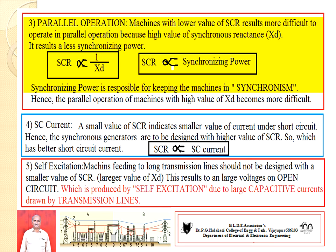Number four: Short Circuit Current. Short circuit current is directly proportional to SCR. If the machine is characterized by a low value of SCR, then the current produced under short circuit conditions is also low. The SCR value should be selected appropriately depending on the design of the synchronous machine.